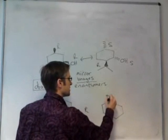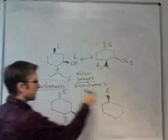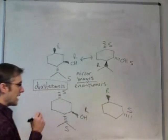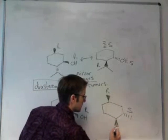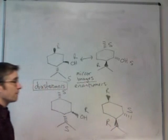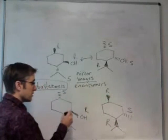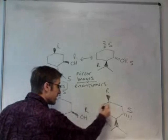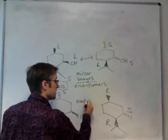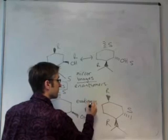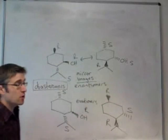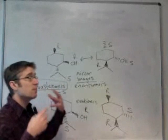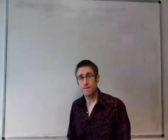We could draw the enantiomer of this compound by inverting each chiral centre. So we could make this one R. We could make this one S. And we could make this one R. Down-up, up-down, down-up, mirror images. So this pair of stereoisomers is enantiomers. But this and this, for example, would again be diastereoisomers. They have different stereochemistry, but they're not mirror images.